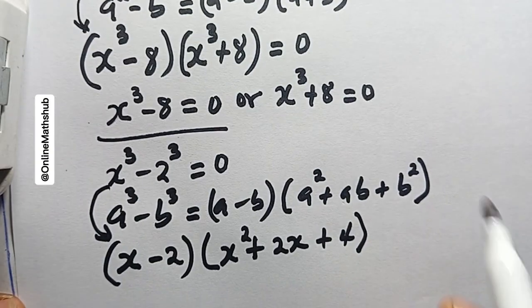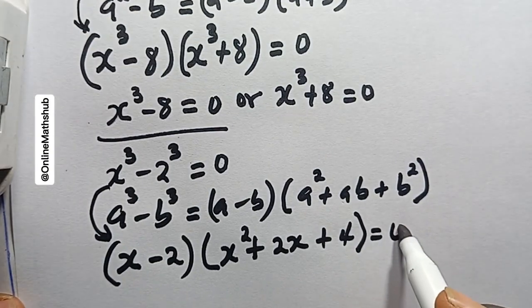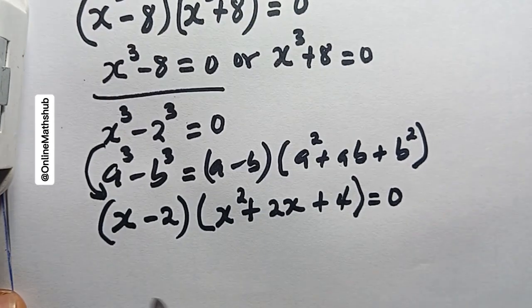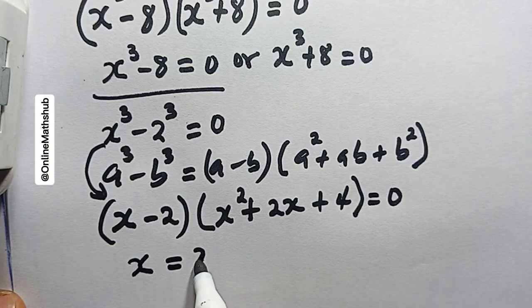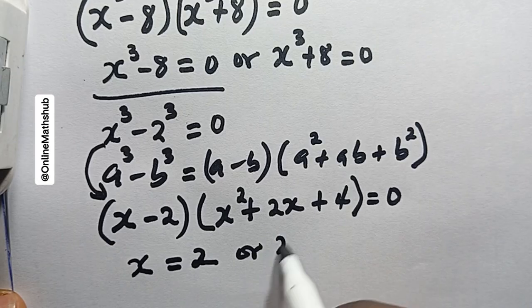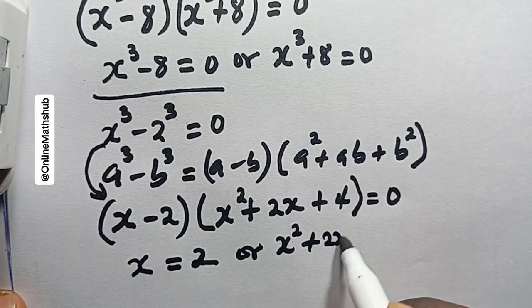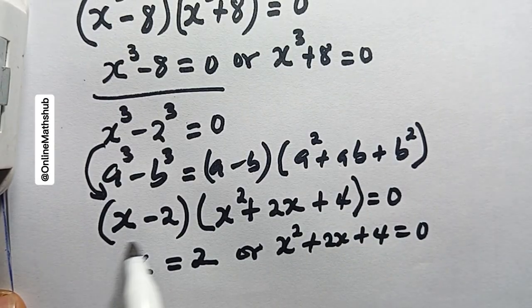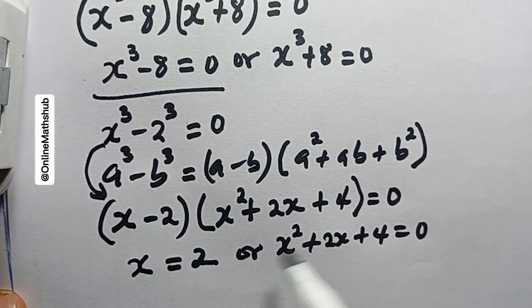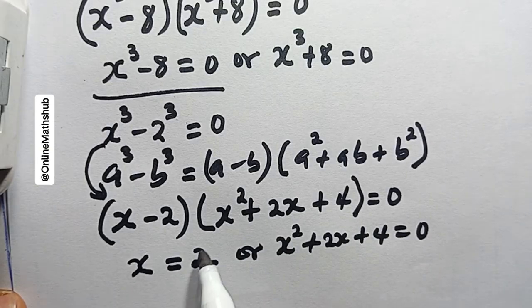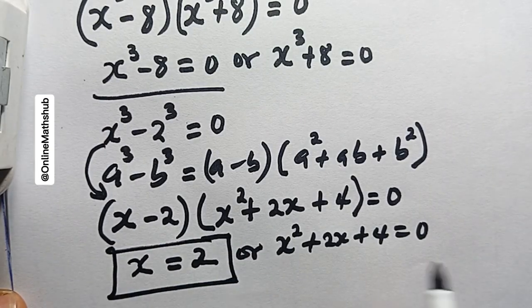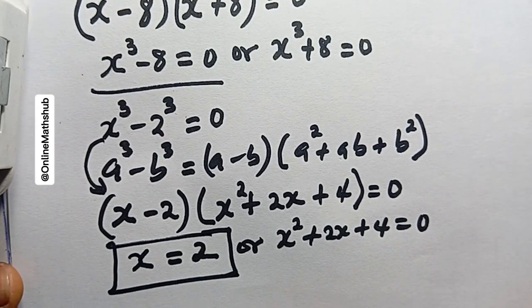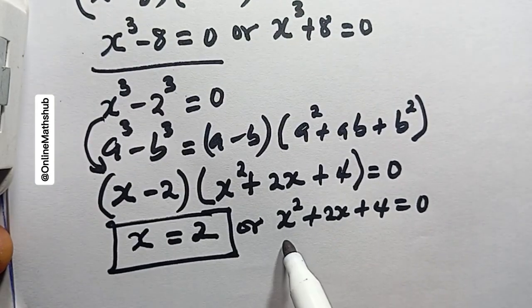So this changes to x minus 2, multiplied by x squared plus 2x plus 4, equals 0. Applying the zero product rule, x equals 2 is one solution. The other factor gives us x squared plus 2x plus 4 equals 0, which I need to solve as a quadratic equation.